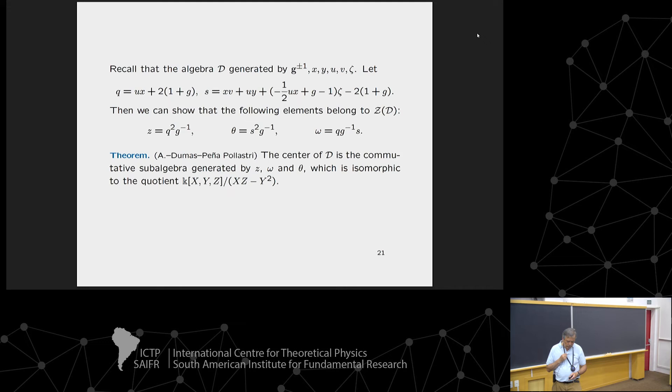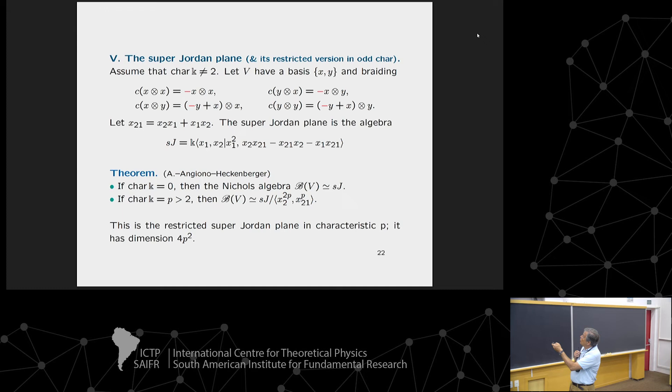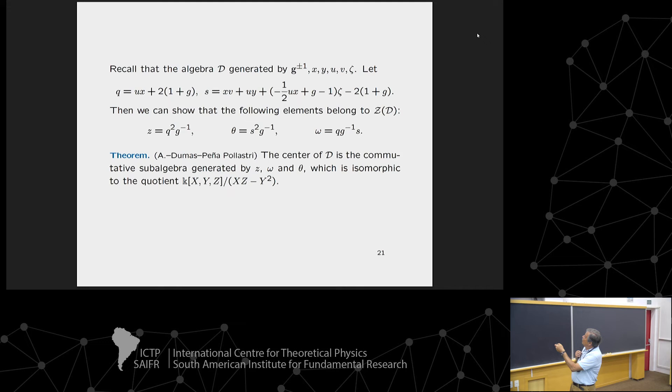Another theorem we obtained about the structure of D is the computation of the center. The center of D is the commutative subalgebra generated by three elements ζ, ω, and θ. These elements are constructed using two auxiliary elements Q and S. They live a priori in the fraction field of D, but we can show they actually live in D and generate the center. This theorem is proved using techniques of non-commutative localization.